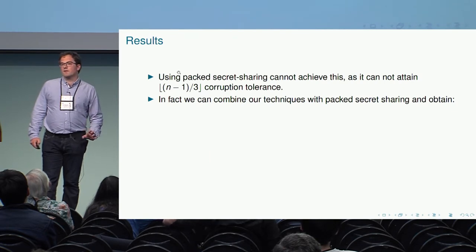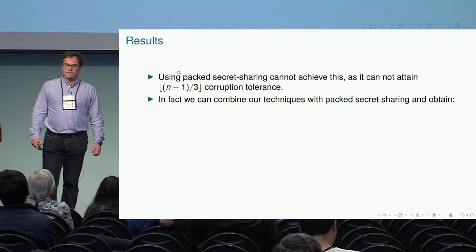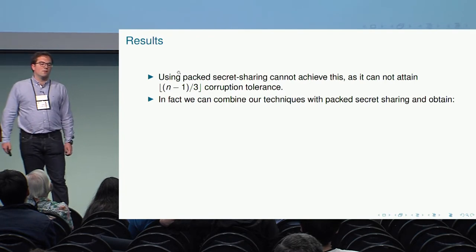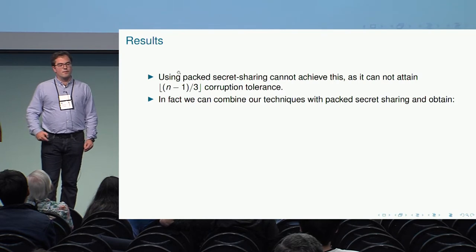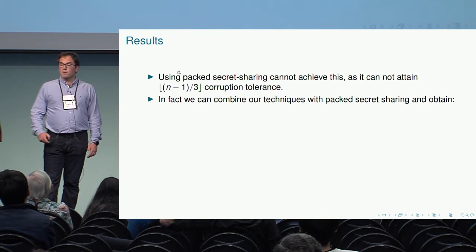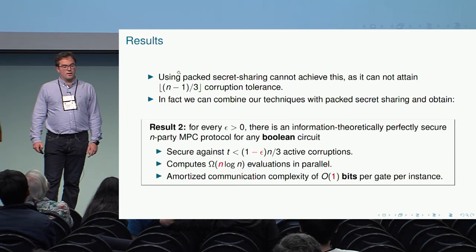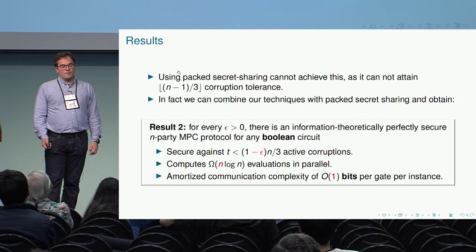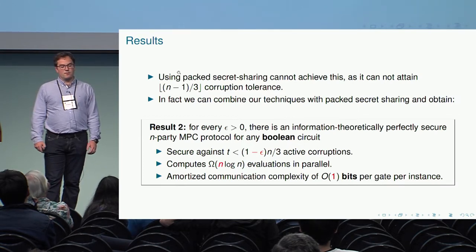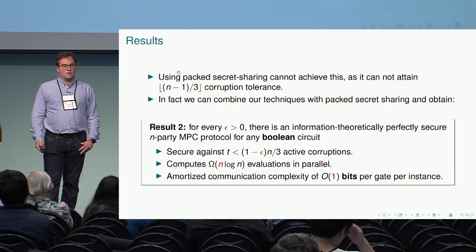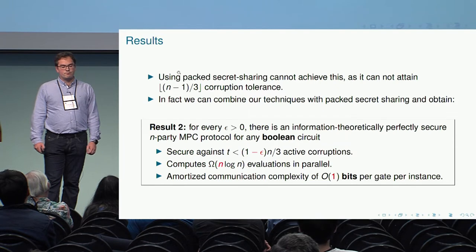You may be thinking that we did this by using packed secret sharing. But the point is that we cannot do that, because if we do, then we lose the (n-1)/3 corruption tolerance and can no longer tolerate this optimal adversary. In fact, we can combine our techniques with packed secret sharing, and if we do that, we get a second result where we cannot tolerate an optimal adversary, but we have an amortized communication complexity of constant bits per gate per instance—at the cost of needing to evaluate n log n circuits.